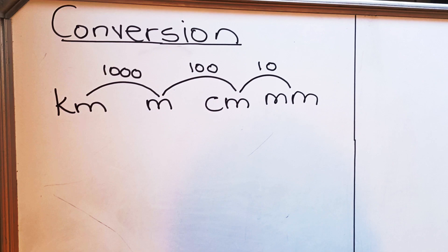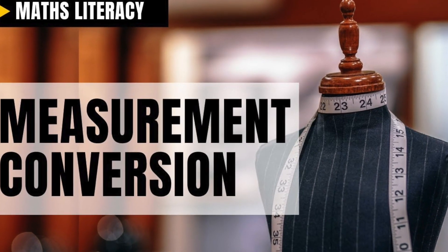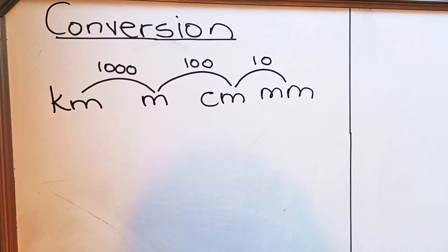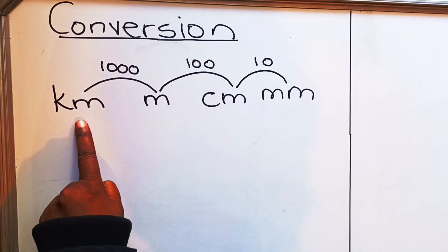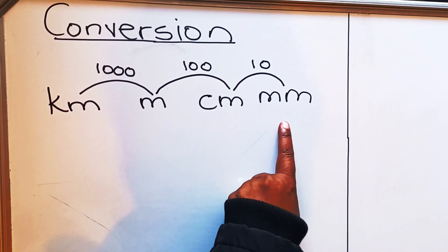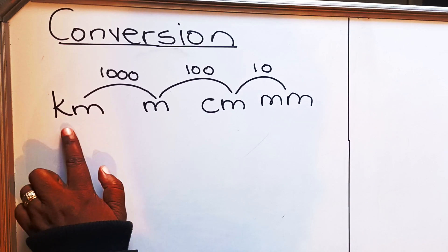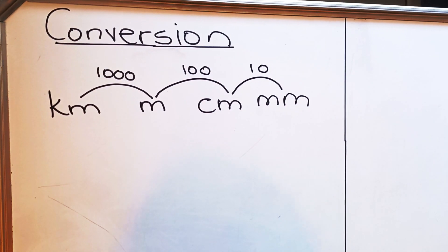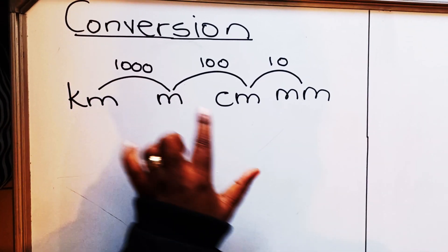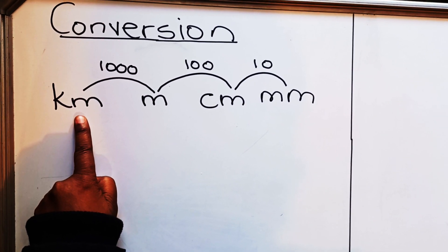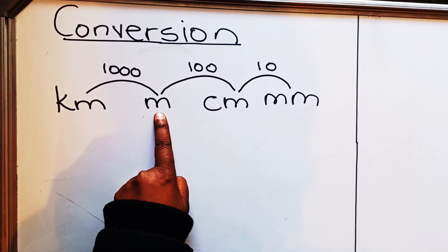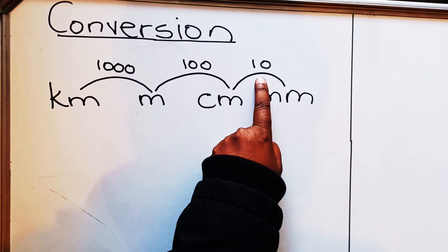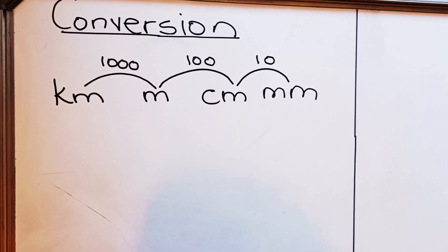Hello everyone. I'm going to do a video on conversion. I've done a video before, but here I'm going to show you a different method to convert from kilometers, meters, and centimeters. The first thing you need to memorize is: kilometers, meters, centimeters, and millimeters. This also works with kilogram or kiloliter — if they give you kiloliter, liter, centiliter, milliliter, you use the same principle. One kilometer equals 1000 meters, one meter equals 100 centimeters, and one centimeter equals 10 millimeters.